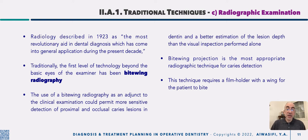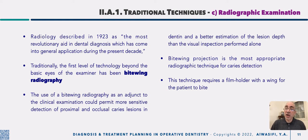The first level of technology beyond the basic eye of the examiner has been the bite-wing radiograph, taken after examination with the naked eye or with magnification tools. The bite-wing radiograph allows for clinical examination and permits more sensitive detection of proximal and occlusal caries lesions, and gives a better estimate of the lesion's extension in depth compared to visual inspection alone.